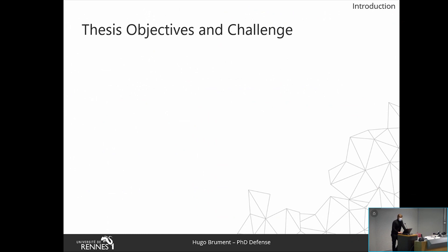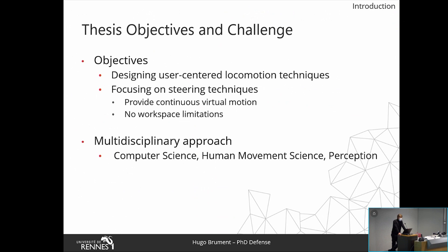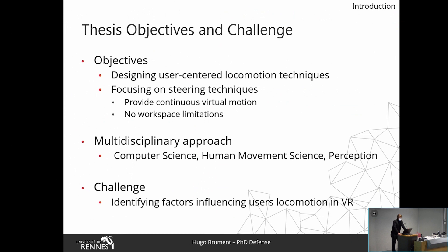To improve locomotion techniques in VR, we focused on steering techniques as they provide continuous virtual motion as in real walking, and they don't require a large workspace for tracking users. To reach this objective, we tried to understand the difference between locomotion in real and virtual environments by following a multidisciplinary approach combining computer science, human movement science, and perception. The main challenge was to understand how locomotion techniques influence users' behavior in VR, and in particular why, when using steering techniques, there is a lack of evaluation techniques compared to others. We then had two research axes.